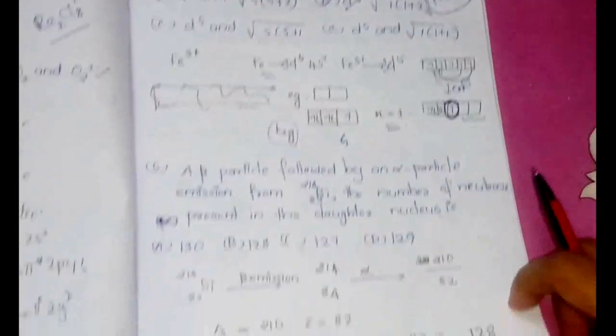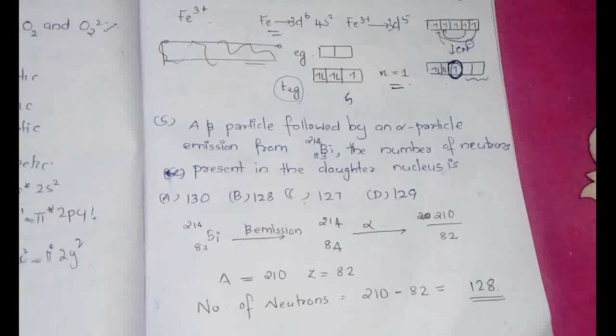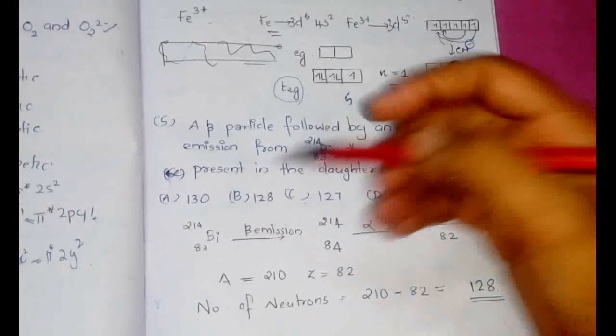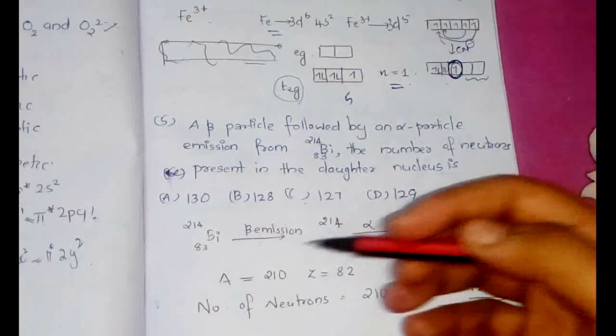The next question is from the part of nuclear chemistry, and the question goes like this: a beta particle followed by an alpha particle emission occurs in bismuth 214-83. The number of neutrons present in the daughter nucleus. So we have to go by the series of sequence of three steps.